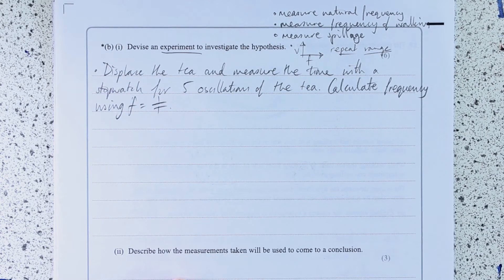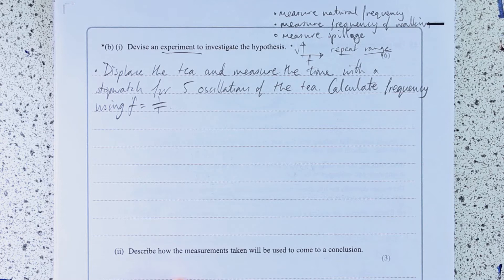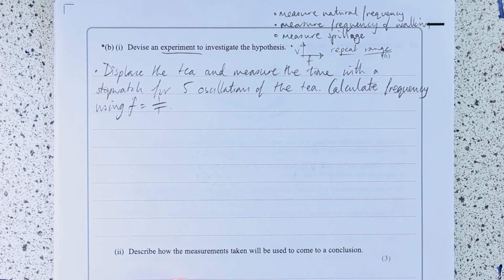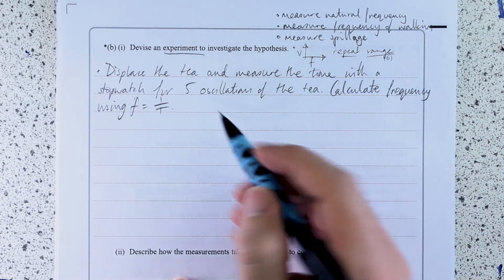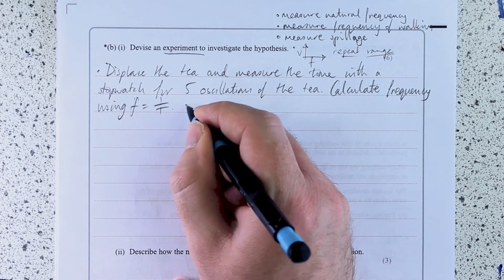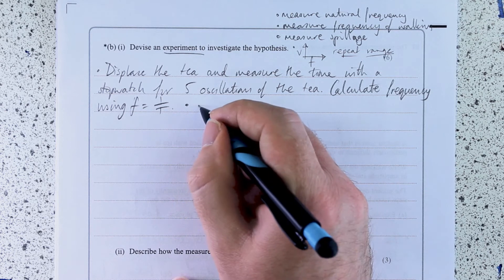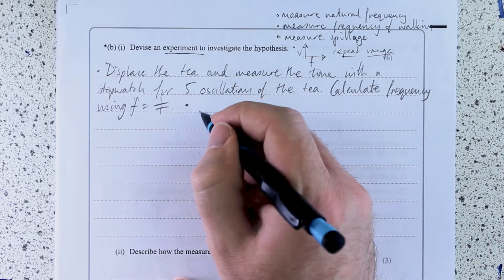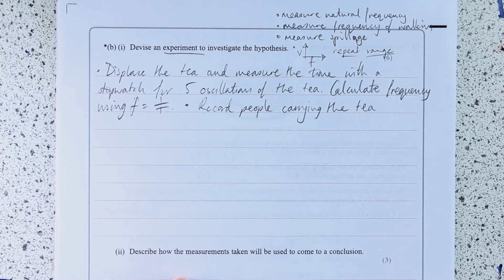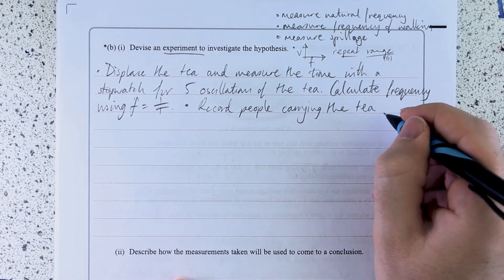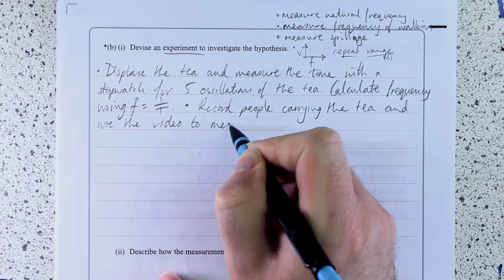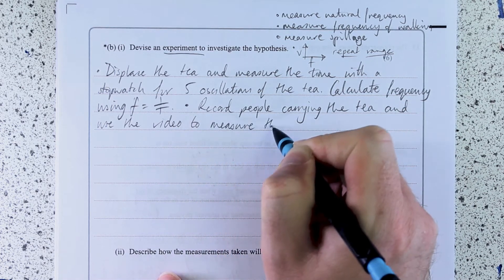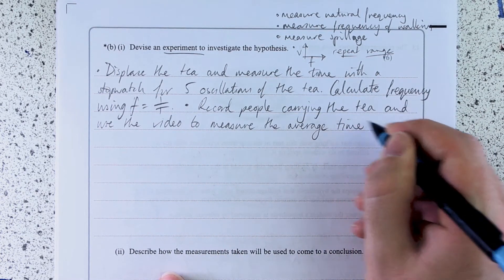So then what I'm going to do is I'm going to carry the tea. Now, actually looking back at my plan, let's talk about how I'm going to measure my frequency of walking. So I'm going to record people carrying the tea and use the video to measure the average time for 10 steps.